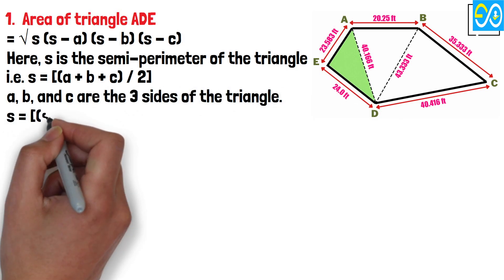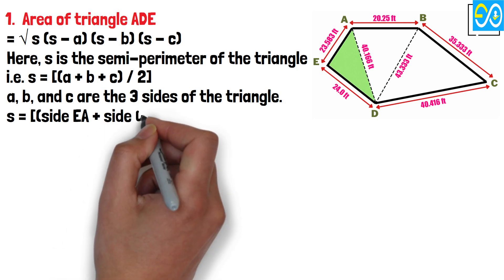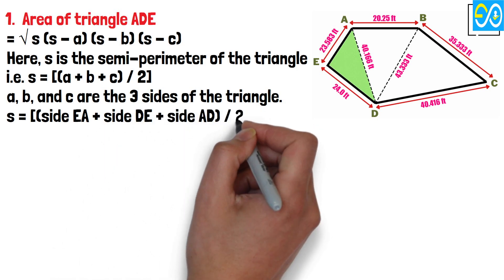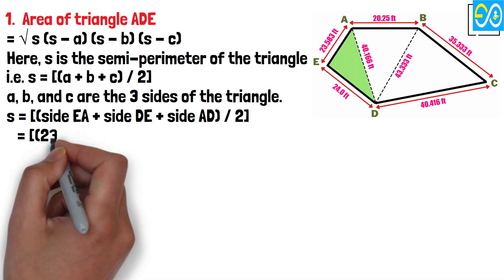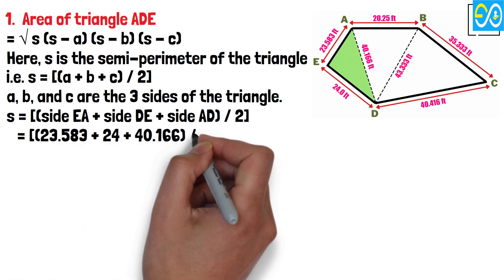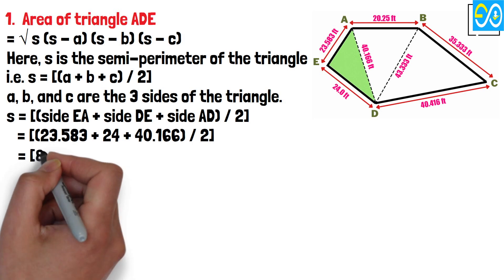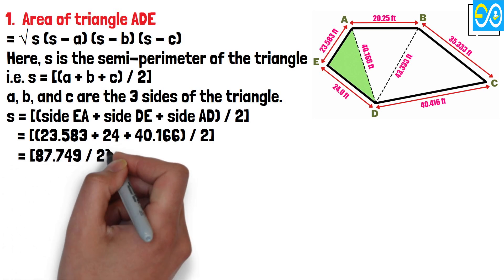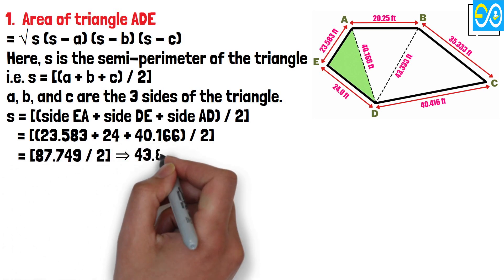By data input, S equals (side EA plus side DE plus side AD) divided by 2. Equals (23.583 plus 24 plus 40.166) divided by 2. Equals 87.749 divided by 2 equals 43.874 feet.